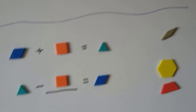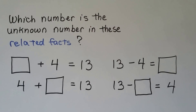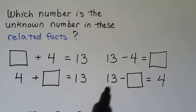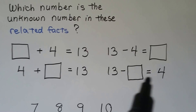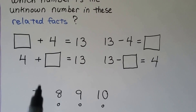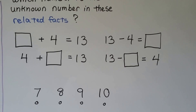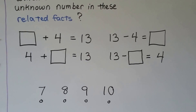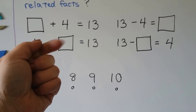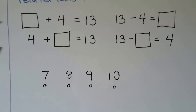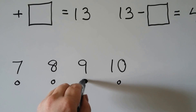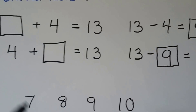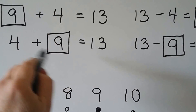Which number is the unknown number in these related facts? We have: an unknown number plus 4 equals 13; 4 plus the unknown number equals 13; 13 minus 4 equals the unknown number; and 13 minus the unknown number equals 4. That's a fact family. We can start at 13 and count back 4: 13, 12, 11, 10, 9. The answer is 9. That means 13 minus 4 is 9, 13 minus 9 is 4, and 9 plus 4 and 4 plus 9 both equal 13 — because we can add in any order.